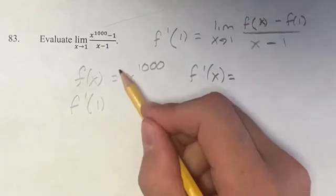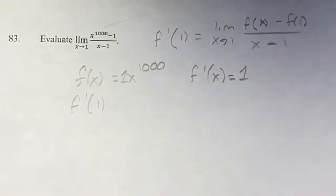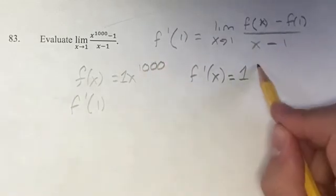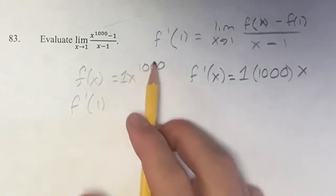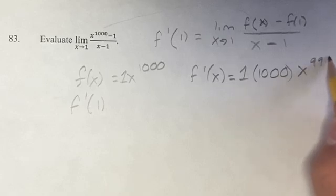We have the coefficient of the power function is just 1, so that stays the same. You bring down the exponent and multiply it by the coefficient. And then your new exponent is the old one minus 1, so x to the 999.